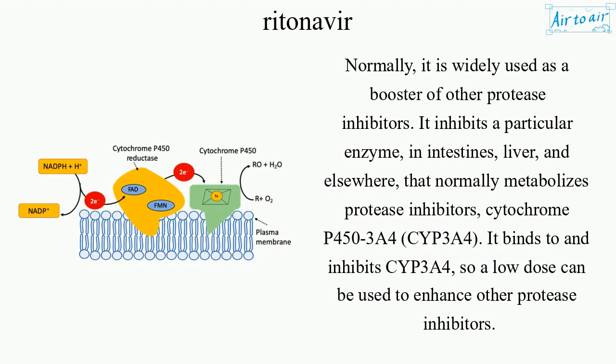It inhibits a particular enzyme — Cytochrome P450-3A4 (CYP3A4) — found in the intestines, liver, and elsewhere, that normally metabolizes protease inhibitors. By binding to and inhibiting CYP3A4, a low dose of Ritonavir can be used to enhance the activity of other protease inhibitors.